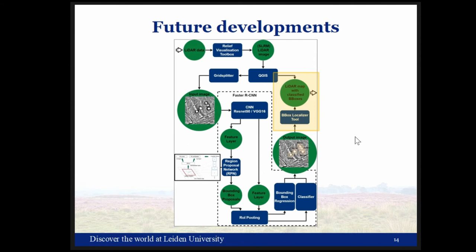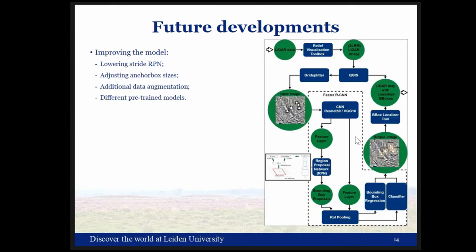The next steps within the research project are to further improve the model and incorporate more classes by revising it: lowering the stride, changing the anchor box sizes, and implementing additional data augmentation. We also want to test whether pre-training on a dataset more comparable to LiDAR data gives better results. Another step is to enlarge the dataset through the citizen science project and by ground-truthing in the field, possibly with faculty and staff.